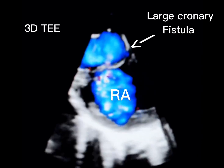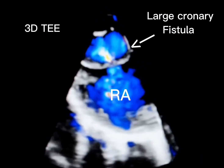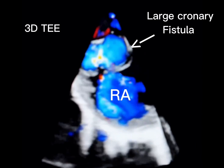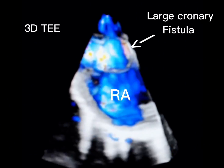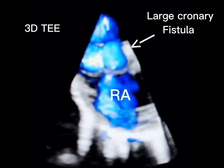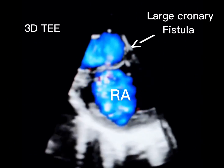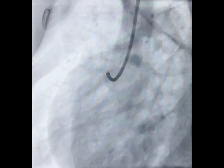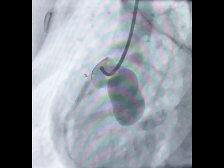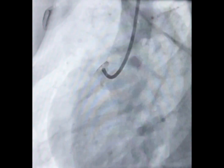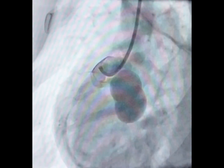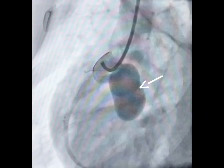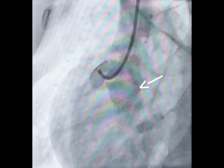Large coronary fistulas progressively dilate due to chronic high-volume runoff from a high-pressure coronary system into a low-resistance chamber, resulting in flow-mediated arterial enlargement. This coronary angiogram of the patient shows the RCA with a large aneurysmal coronary fistula.